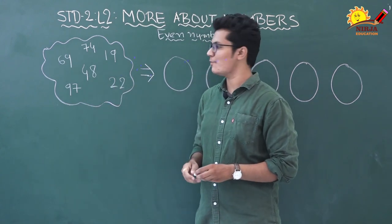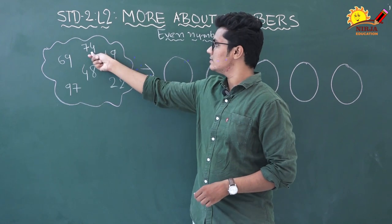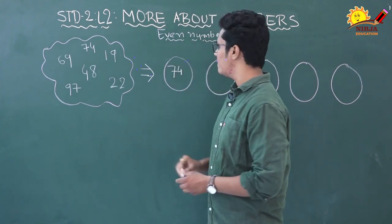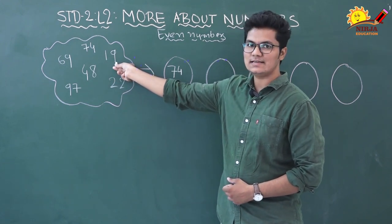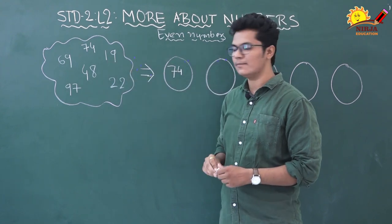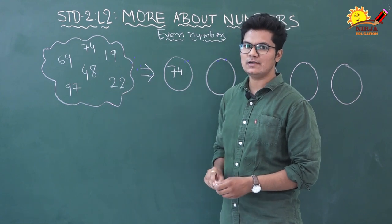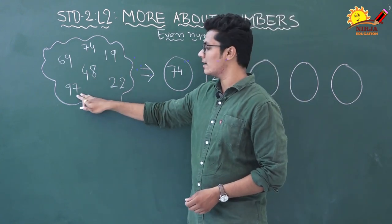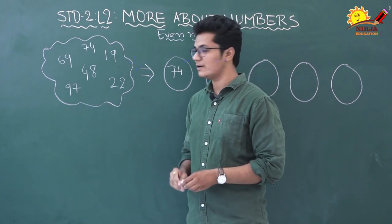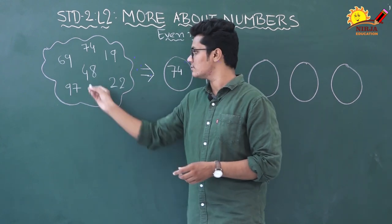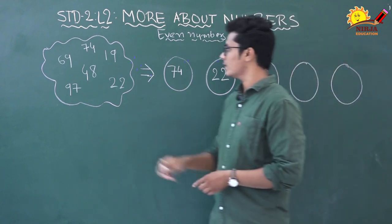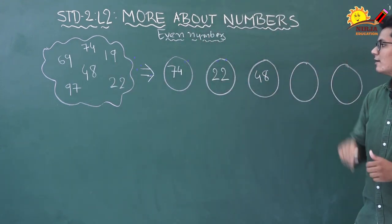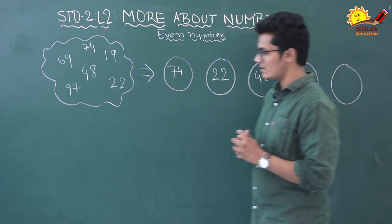Now let's find the even numbers. Seventy-four — ones place is four, which is even, so seventy-four is our first even number. Nineteen — ones place is nine, which is odd. Twenty-two — ones place is two, which is even, so twenty-two is another even number. Ninety-seven has seven — odd. Forty-eight has eight — even. Sixty-nine has nine — odd. So three of these numbers are even numbers.